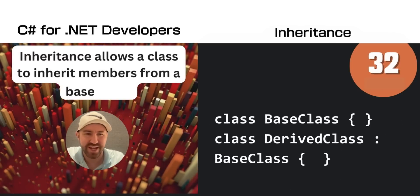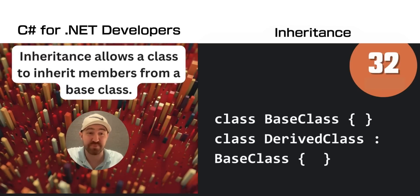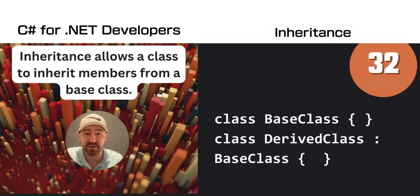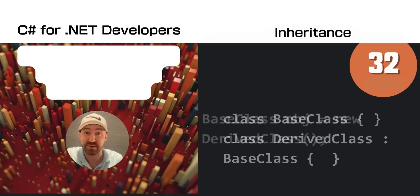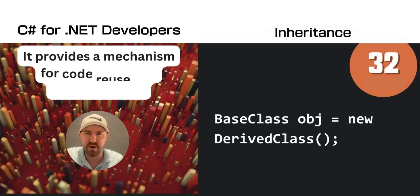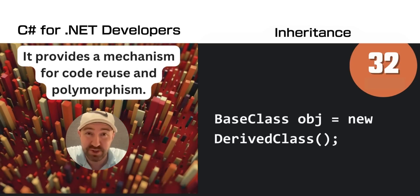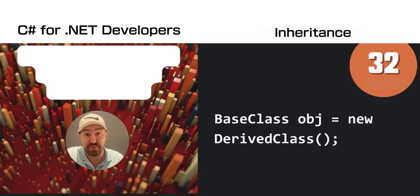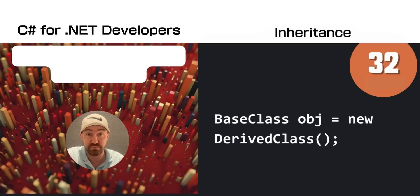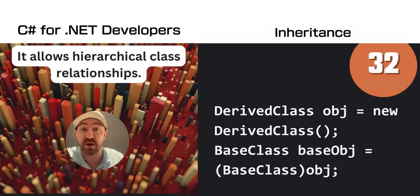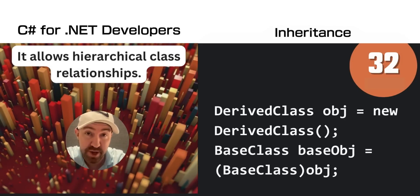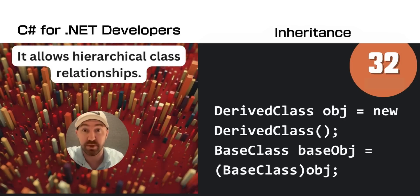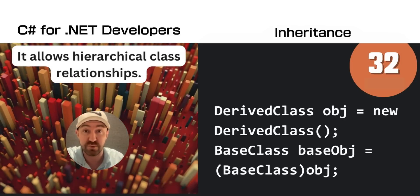Inheritance allows a class to inherit members from its base class. Here you can see a derived class inheriting from a base class. For object-oriented programming, you use this for code reuse and polymorphism. The hierarchical class relationship can be demonstrated by this example of casting.